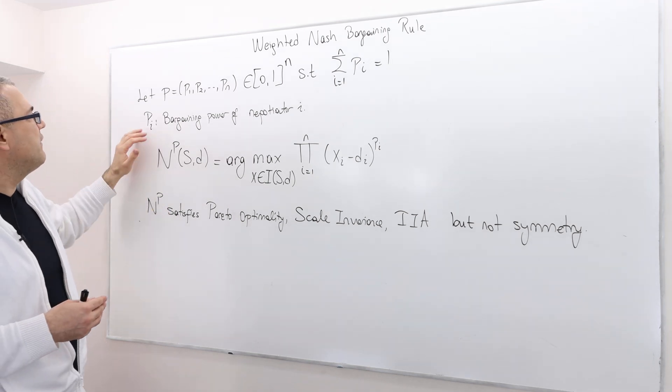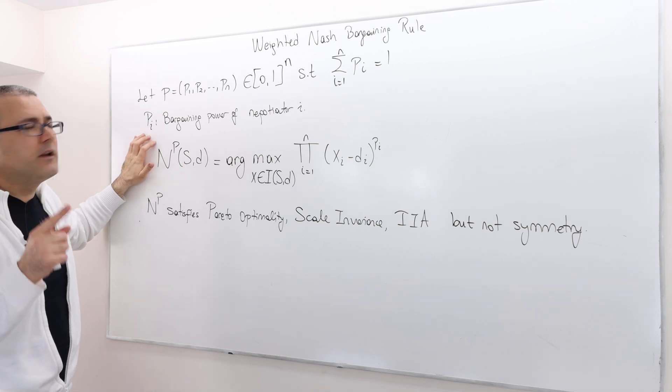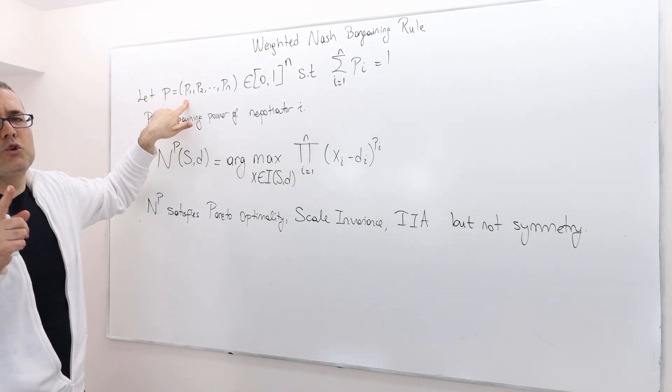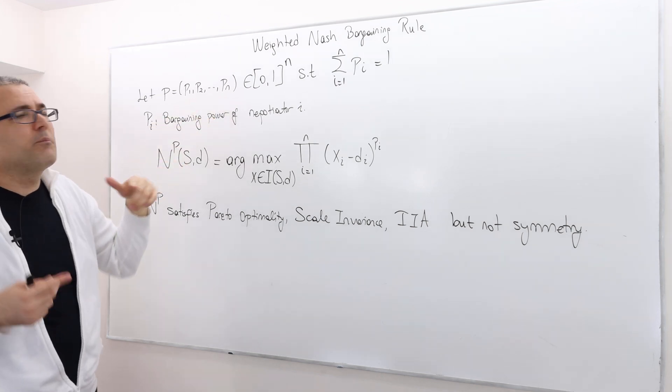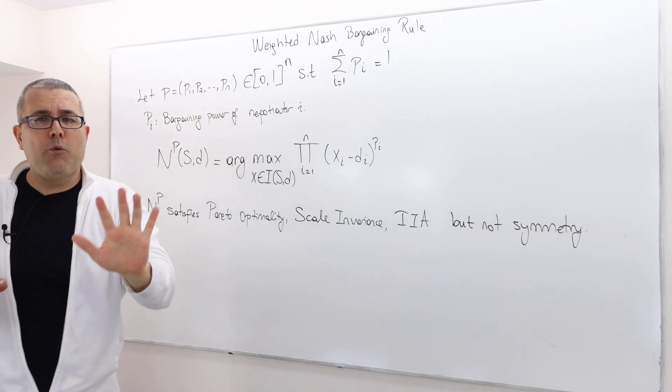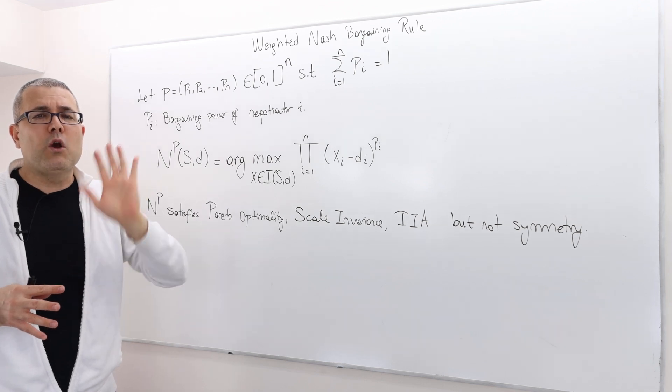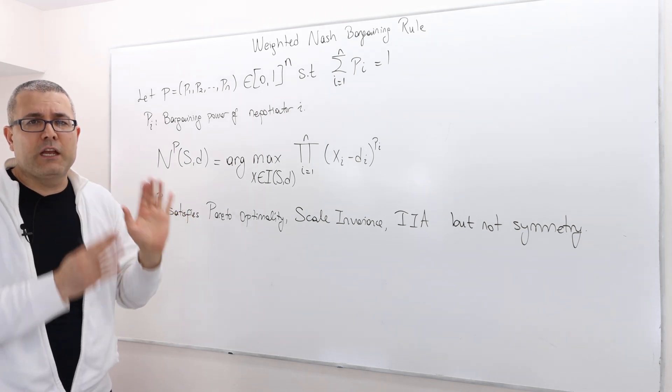So the higher, for example, if P-I is equal to 1, I mean, for example, P1 is equal to 1 and all the other P-I's are 0, that means the other bargainers have no bargaining power at all. We only care about player or negotiator 1.